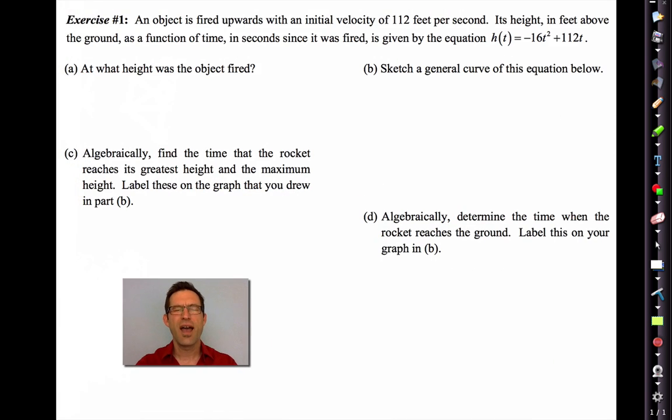Exercise 1. An object is fired upwards with an initial velocity of 112 feet per second. Its height, in feet above the ground, as a function of time, in seconds since it was fired, is given by this equation. Make sure that you understand always, when you're given an equation, what it represents. The T, the time input, is the number of seconds since it was fired. And the output, H, is the height it is above the ground, in feet above the ground.